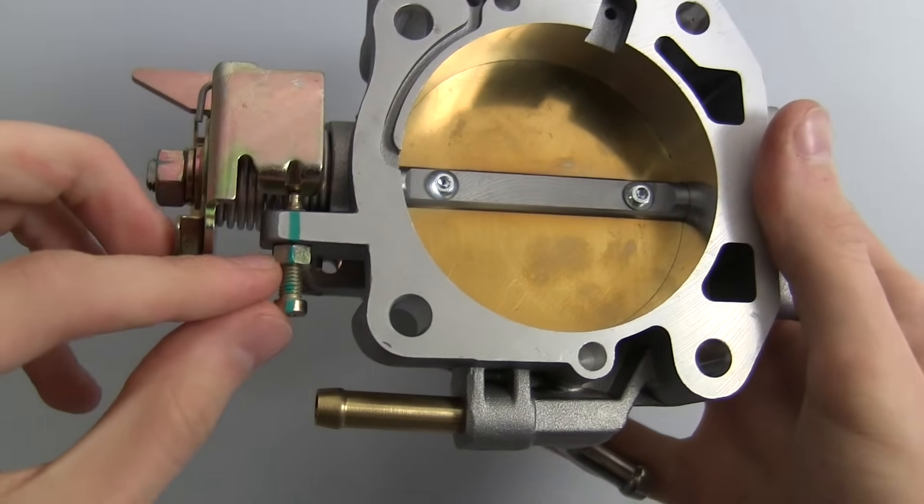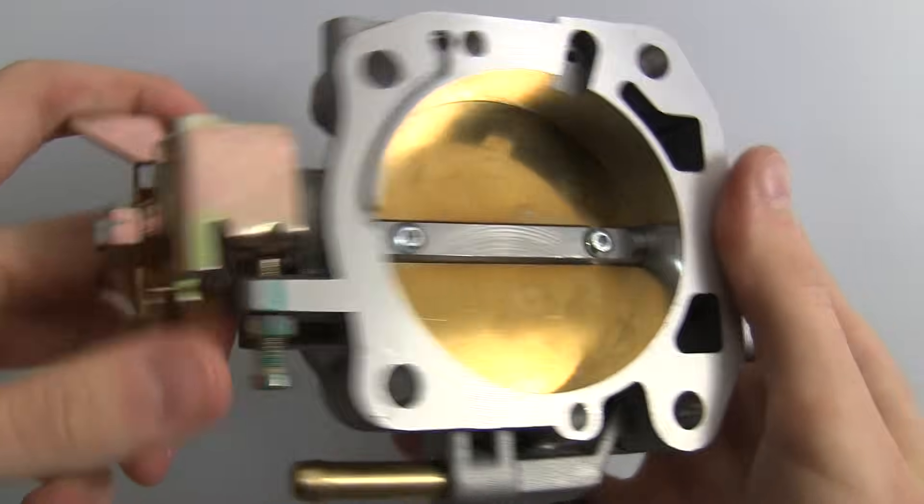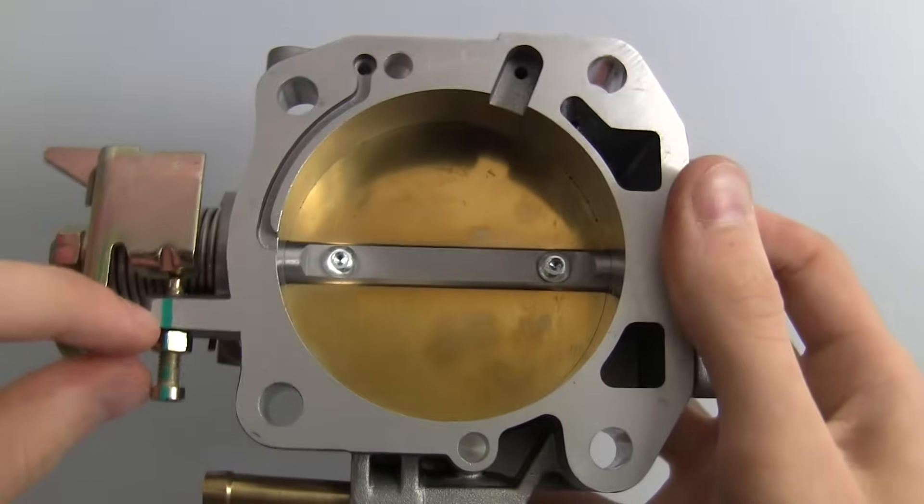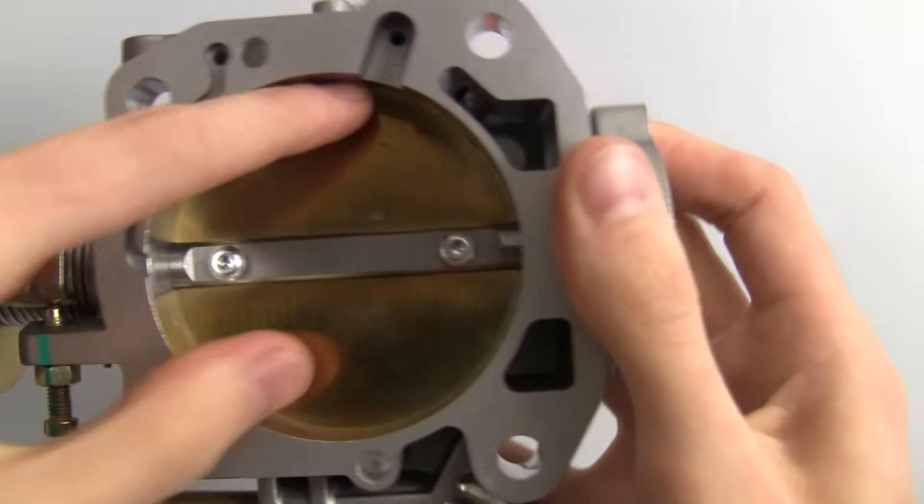Now on the left side here we have this throttle body stop screw and basically what this is doing is preventing this spring from rotating the throttle body anymore and this creates the stop for where this should stop rotating in order to fully close the throttle.